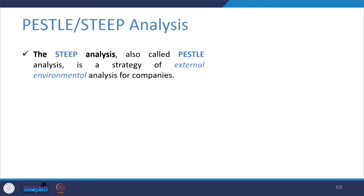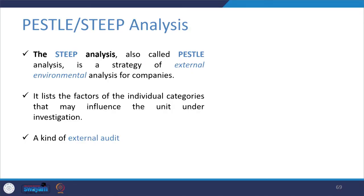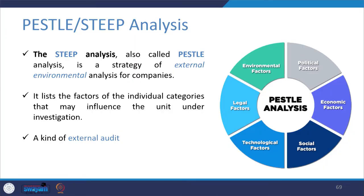First is PESTEL or STEEP analysis. The STEEP analysis is also called PESTEL analysis — it is a strategy of external environmental analysis for companies. It lists the factors of the individual categories that may influence the unit under investigation. The unit can be a particular sales group, a strategic business unit, or an entire company. PESTEL is termed as a kind of external audit where we sense what external factors — beyond the control of an organization — are affecting our selling efforts. PESTEL is an acronym for Political, Economic, Social, Technological, Legal, and Environmental factors.